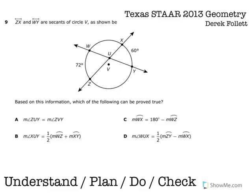This is the Texas STAAR 2013 geometry test, question number nine. It says line ZX and WY are secants of circle V as shown below. Based on this information, which of the following can be proved true?